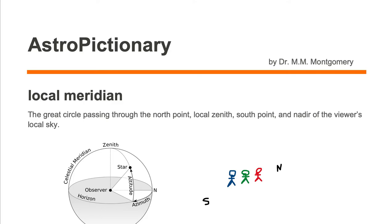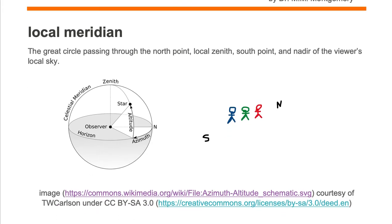The meridian is the great circle passing through the north point, local zenith, south point, and nadir of the viewer's local sky.